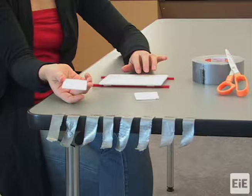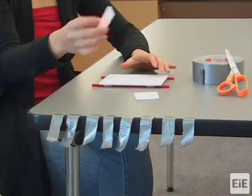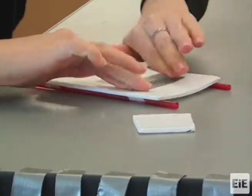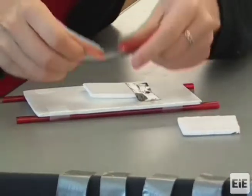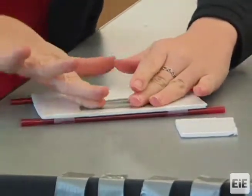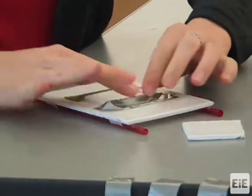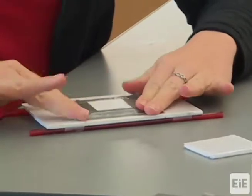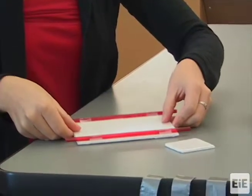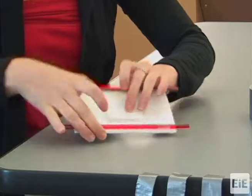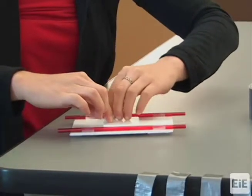Use duct or masking tape to tape one foam piece onto the center of the raft on one side. Then tape the other foam piece onto the center of the opposite side of the raft. Try to align the pieces on both sides as close to the center of the raft as possible.